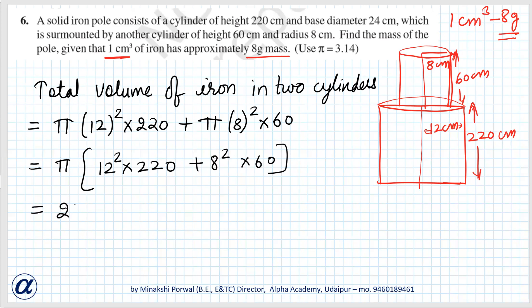So it is 12 square times 220 plus 8 square times 60. We are given 3.14 to use, so we will put 3.14 times 144 times 220 plus 64 times 60. So we will multiply these two and then add.